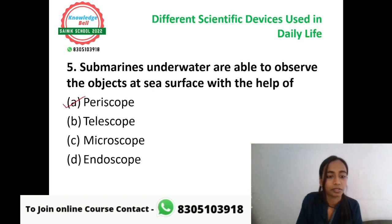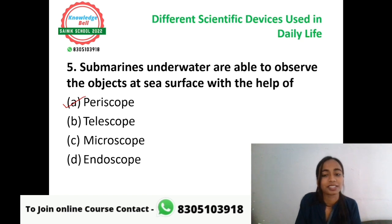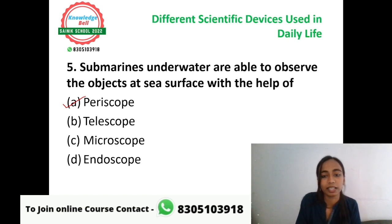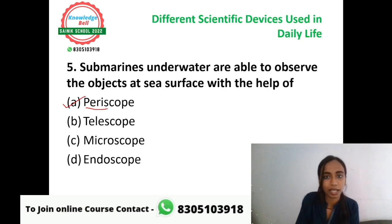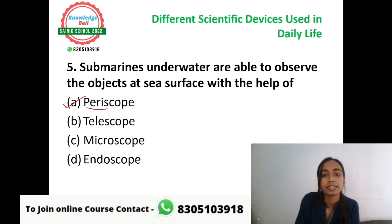The correct answer is A, periscope. Submarines underwater are able to observe objects at the sea surface with the help of a periscope. This device allows underwater submarines to see what is happening at the sea level above them.